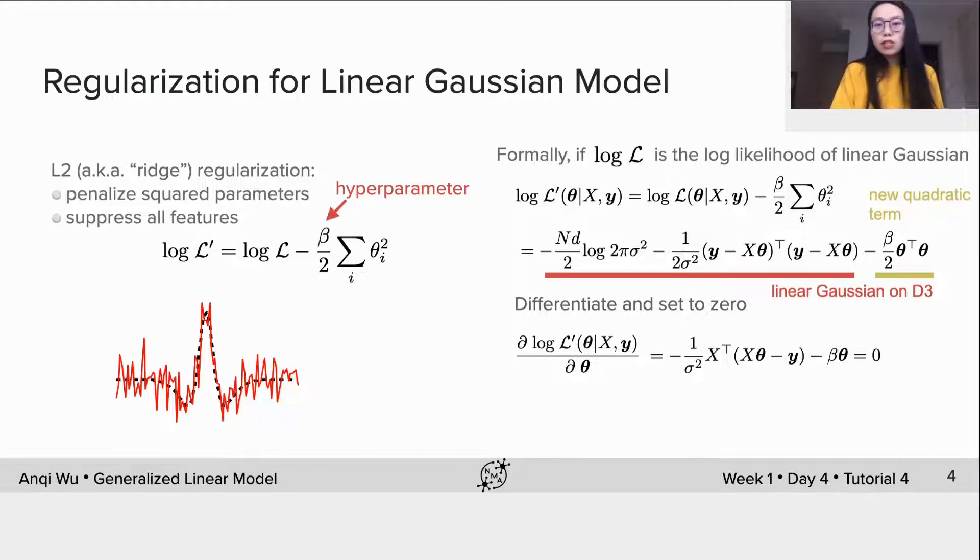We then differentiate the entire function and set the gradient to zero. If you couldn't figure out the derivation at first glance, that's fine. All you need to know is this closed form solution. We can compare this with the MLE solution without the penalty term, and we can see the only difference is that we add a diagonal term to the covariance of input features now.